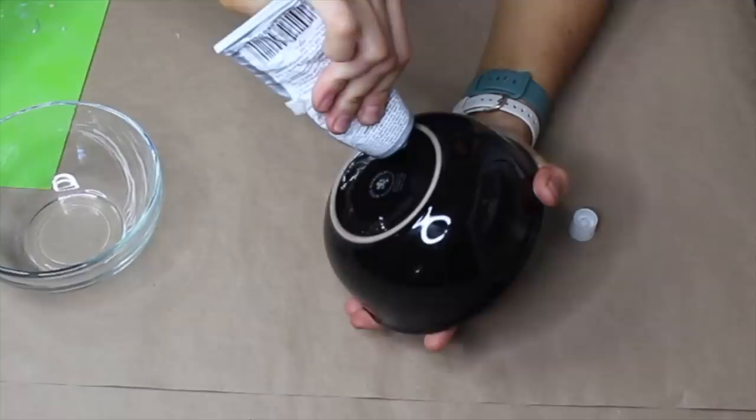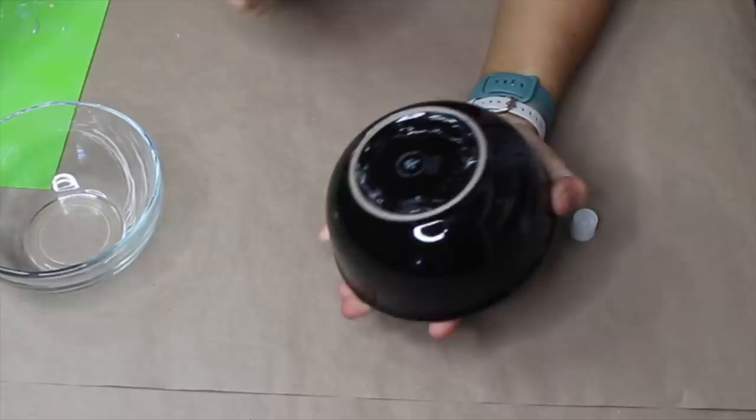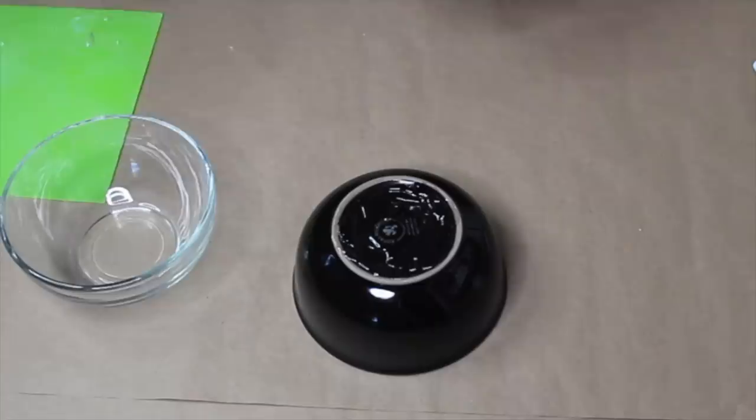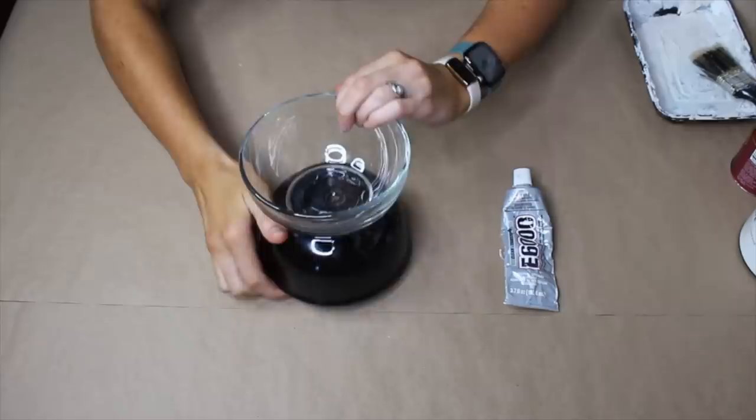I'm going to start with my E6000 and just go around. Then I'm going to add my hot glue because the hot glue will act a little faster than the E6000. Now I'm just going to put this on top.